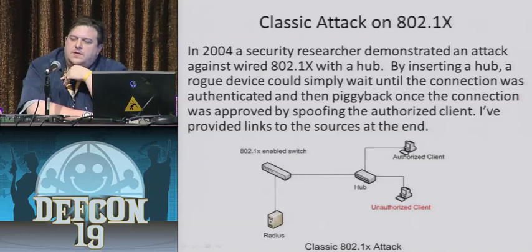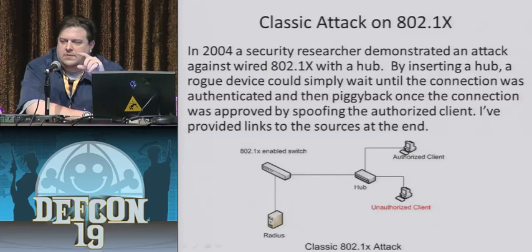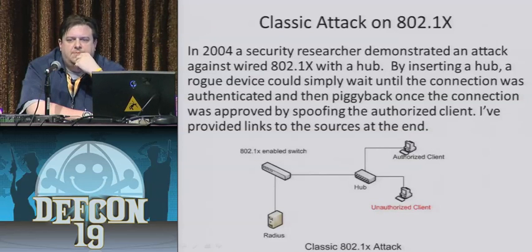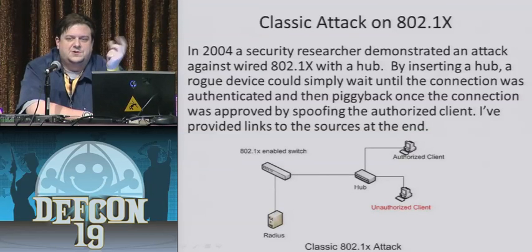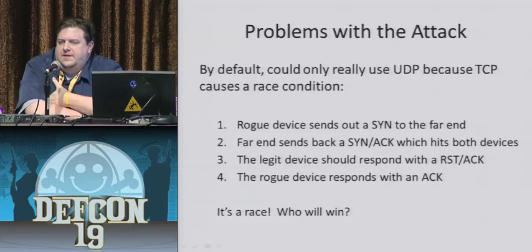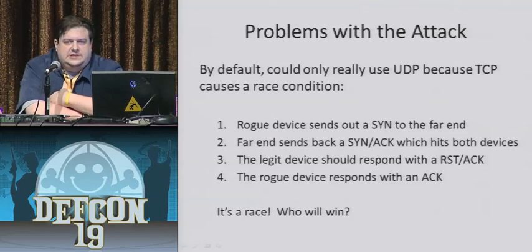Once a legitimate device would authenticate to the network, the rogue device could then piggyback off of the existing connection. There were a few problems. Interestingly enough, when I was researching who to give credit to for this particular attack, there were a couple of names that came up — one was a gentleman from Microsoft who posted on their TechNet blog, and another who was dated about a year earlier. I put both of them in my links section. The problem with having two devices on the network that respond to the same information is you can really only use UDP, because TCP causes a race condition.